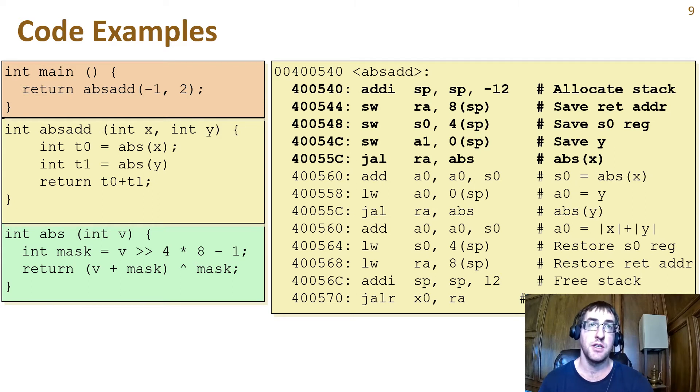After the first call to abs returns, we copy the return value into register s0 using an add instruction with zero. This gets the absolute value of x into s0.